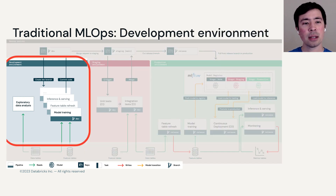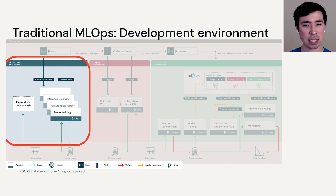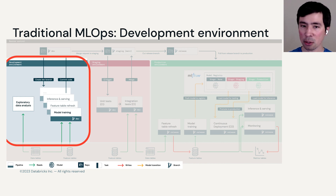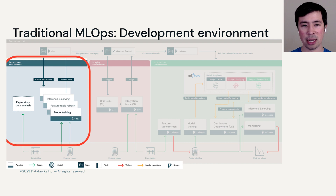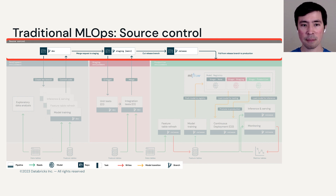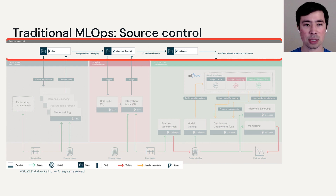Starting on the left, a data scientist, for example, might operate in the development environment, maybe doing some exploratory data analysis. That code might not move towards production, but they're also writing pipelines like a model training pipeline or a feature table refresh pipeline, which are geared towards production. Once those are ready, they can be committed to source control, which is one of our primary conduits for moving ML assets — code in particular — towards production.